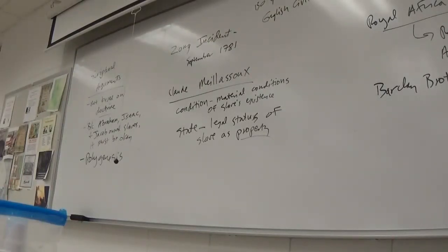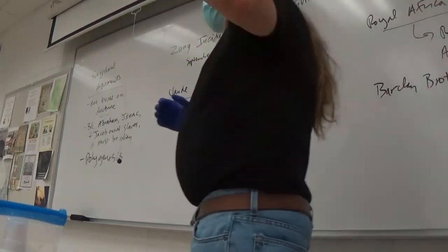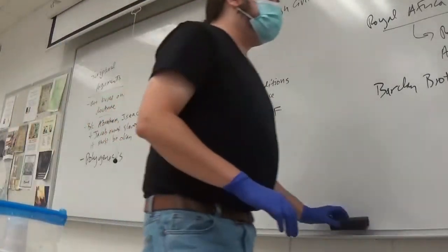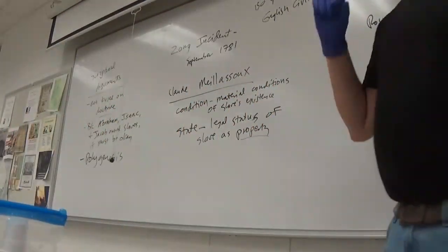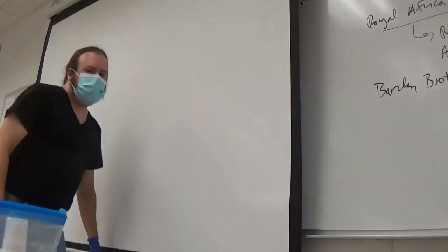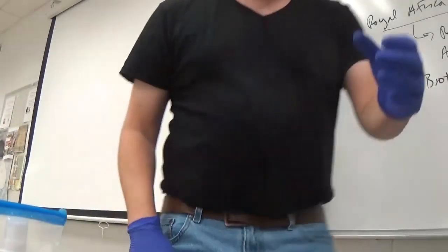That is about all the time we have, so we're going to stop there. We might talk about Coleridge a little bit next time, but we will definitely be spending most of the period on Equiano and Prince. And let's just get started cleaning up.